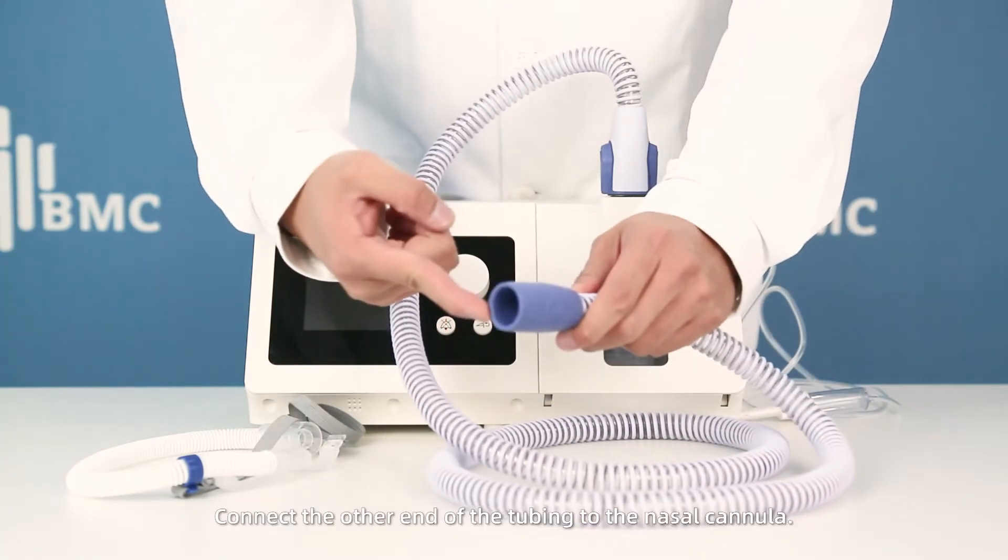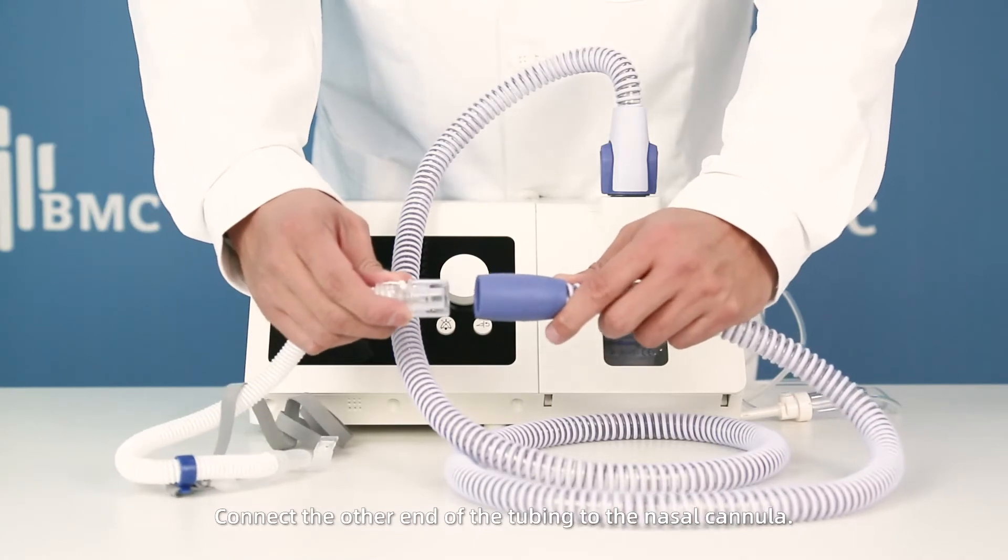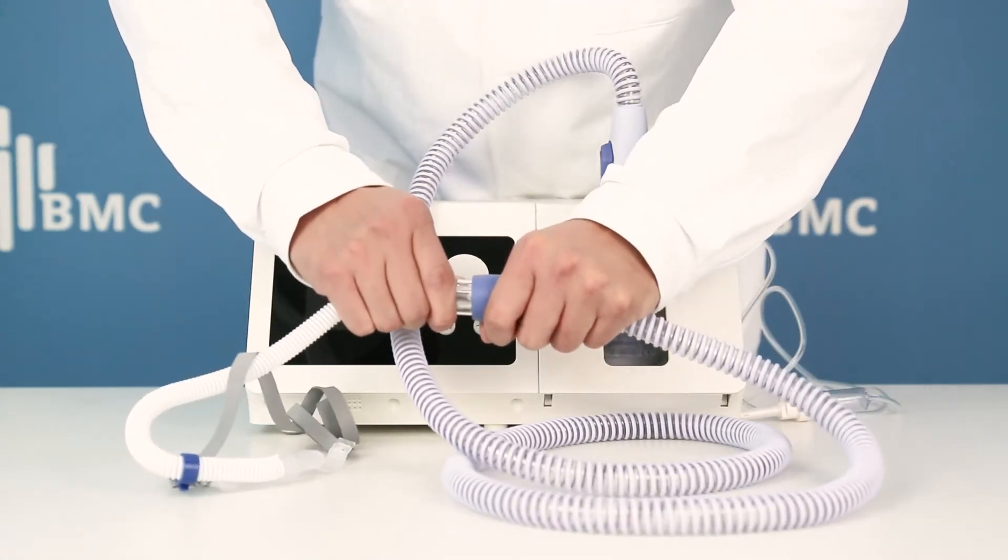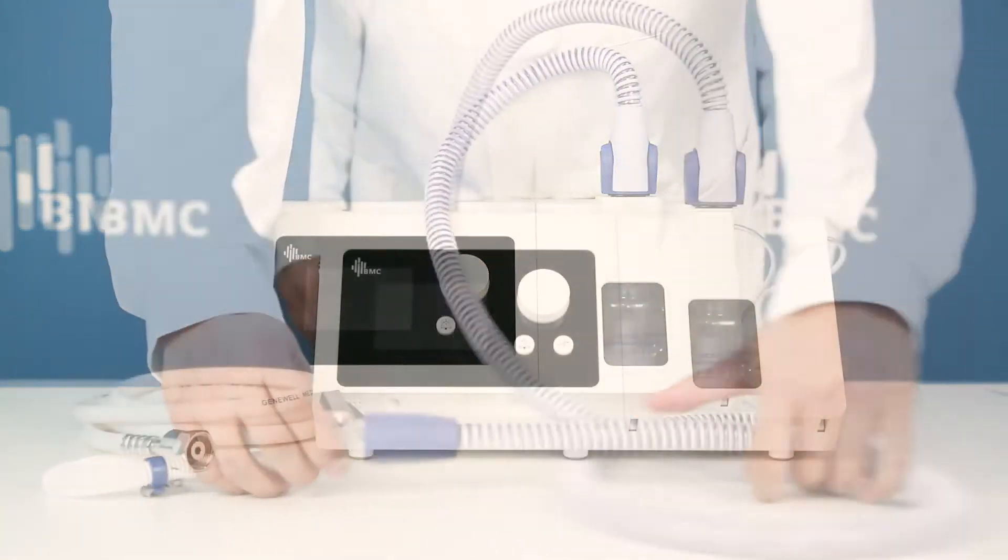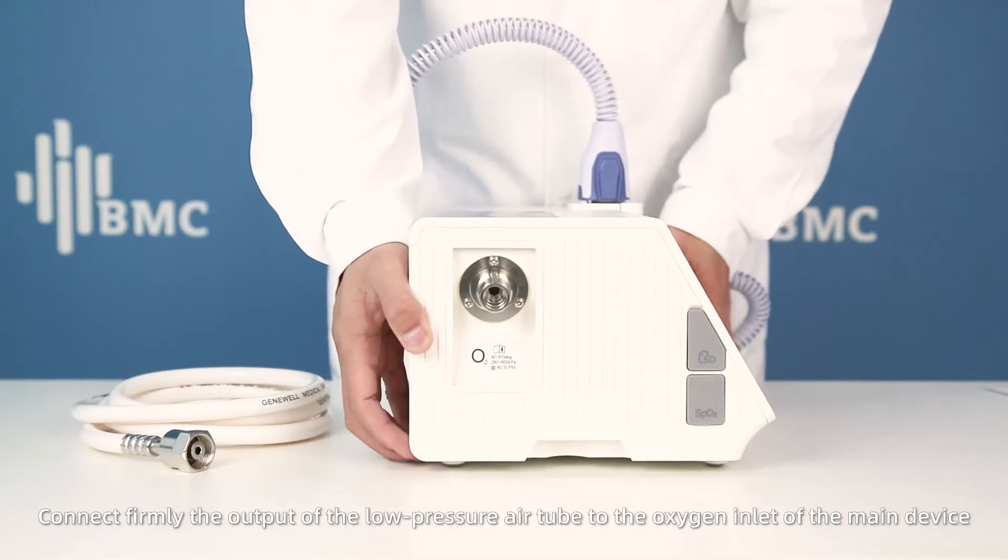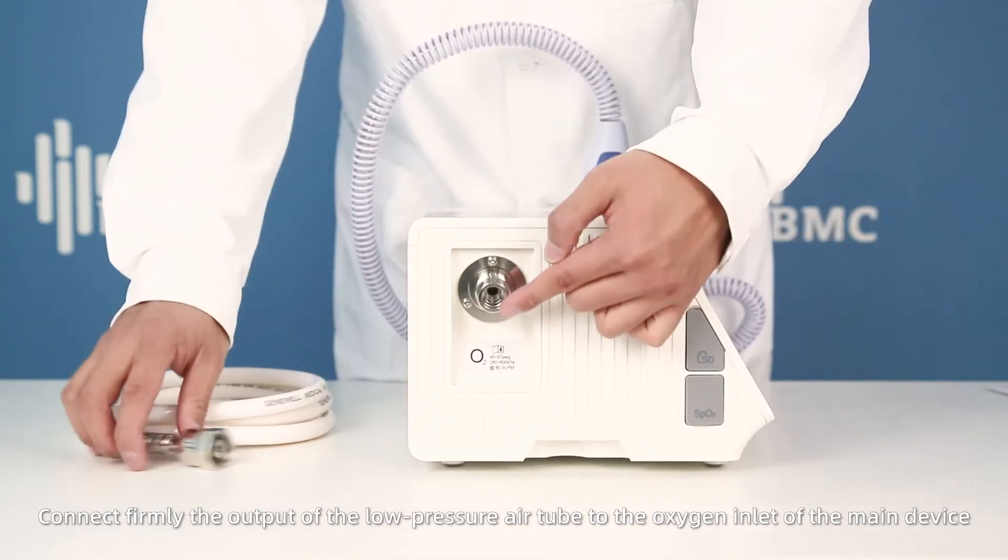Connect the other end of the tube to the nasal cannula. Connect firmly the output of the low-pressure air tube to the oxygen inlet of the main device.